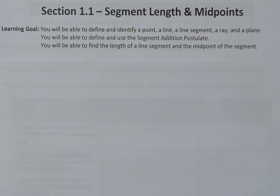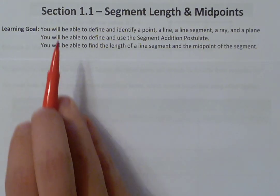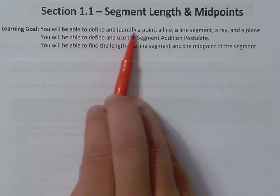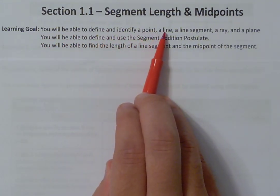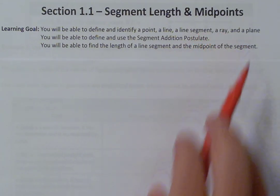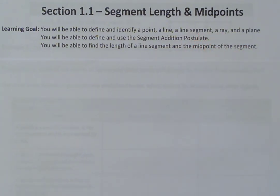So with that said, we are going to go ahead and get into today's lesson. Before we jump into content, let's look at our three learning goals. Our first learning goal is you will be able to define and identify a point, a line, a line segment, a ray, and a plane. We're going to talk about those five figures — their definition, what they look like, and how we're going to go through and name them.